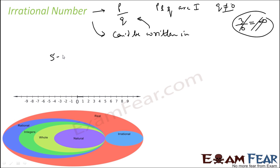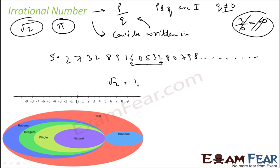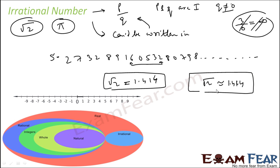For example, a number like 5.27328916053280789... where the list continues with no repeating pattern and the decimal expansion is infinite — that is an irrational number. Root 2 is a good example of an irrational number. Pi is also a good example. We say root 2 is approximately 1.414 — root 2 is not exactly equal to 1.414; it's just an approximation used for ease of calculation. Similarly, pi is not exactly 3.14 — that is just an approximation.